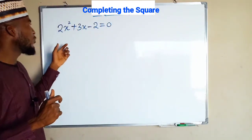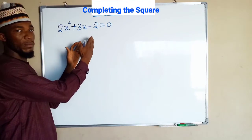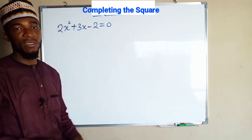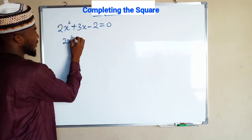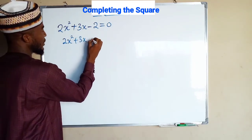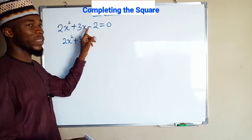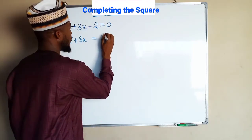Remember, in our previous lesson, I told you we only need the first and the second term. Therefore, we are going to take the constant term to the right-hand side. So we have 2x squared plus 3x, and this negative 2 is going to become positive 2 on the right.